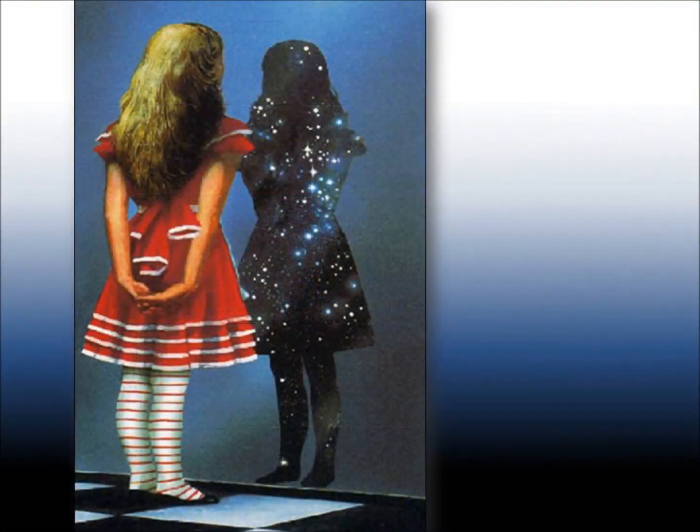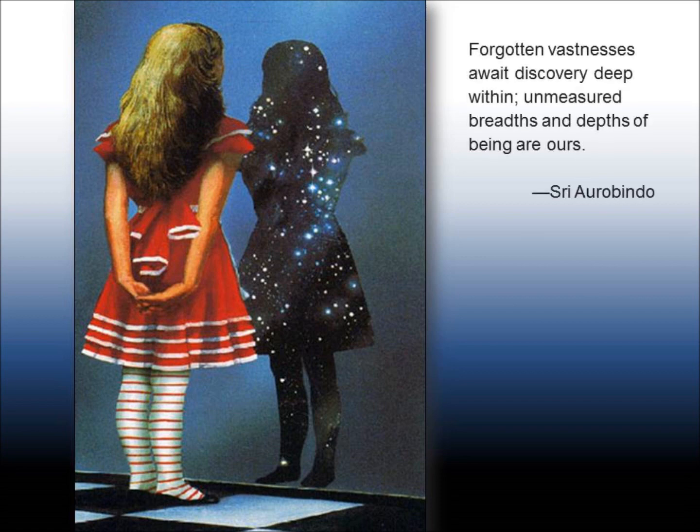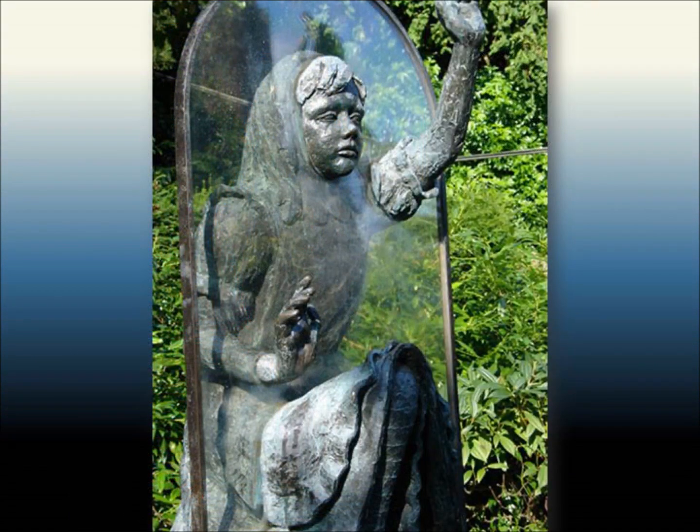Sri Aurobindo says, The small person we seem to be on the surface, this frontal external being we think we are, is not all we are. He says, Forgotten vastnesses await discovery deep within. Unmeasured breaths and depths of being are ours. But we're usually not aware of them because there's a veil between our normal surface consciousness and this inner consciousness.